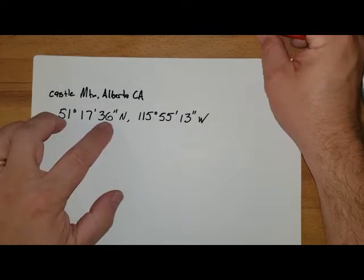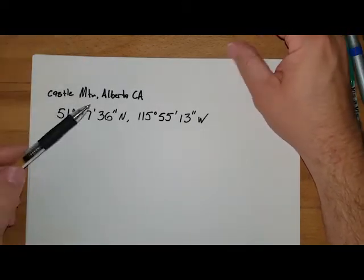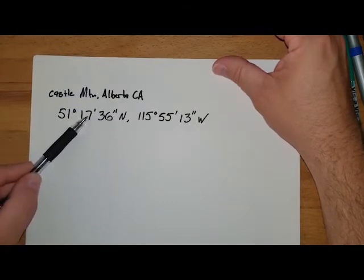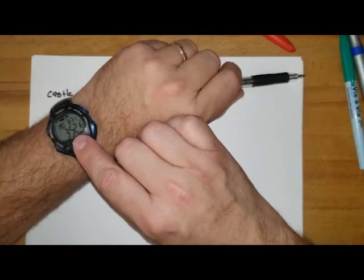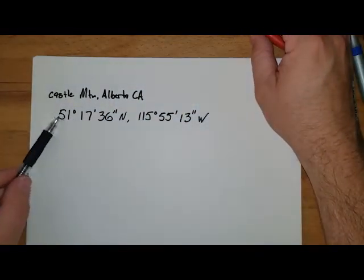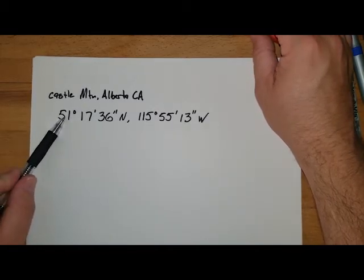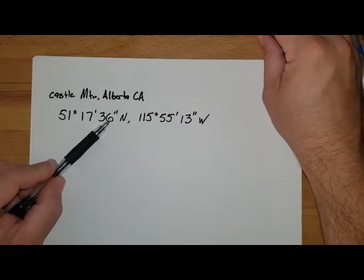Now we call it degrees, minutes, and seconds, and it is convenient that it's similar to time because we know that there are 60 seconds in one minute and there are 60 minutes in an hour. But we also know that it's going to be 60 minutes in one degree.